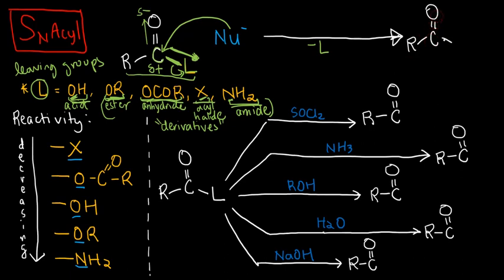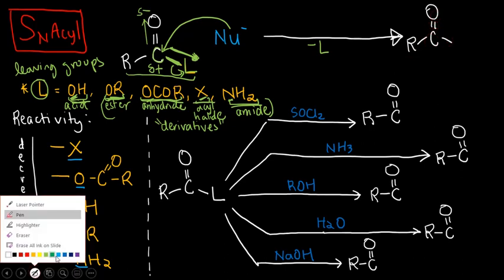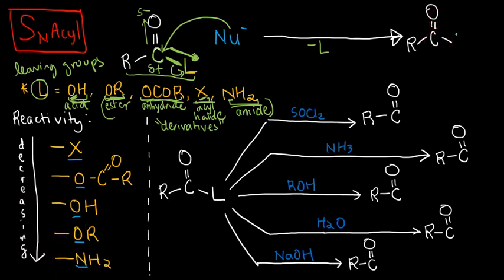So what would be the final product? R, C double bond O, and then in place of the leaving group which has already left, the nucleophile. So the nucleophile has replaced or substituted for the leaving group. That's why it's a substitution reaction. Nucleophilic substitution.